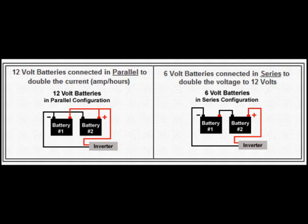If you connect two batteries in parallel, which will be positive to positive and negative to negative, you'll increase the size of the battery but not the voltage. The voltage will remain at 12 volts — you'll just double the battery life power.